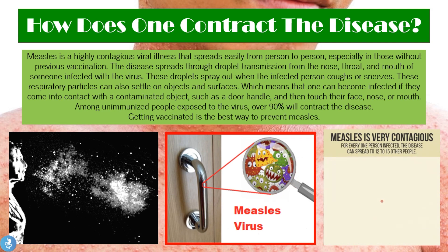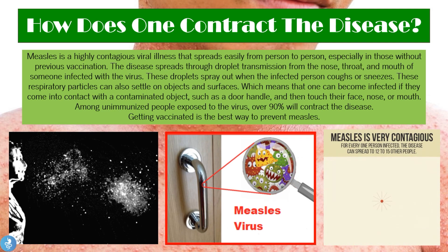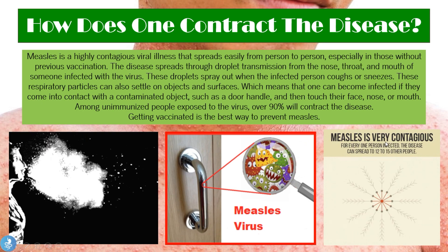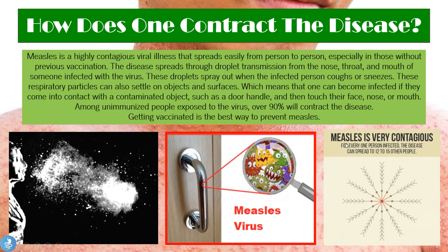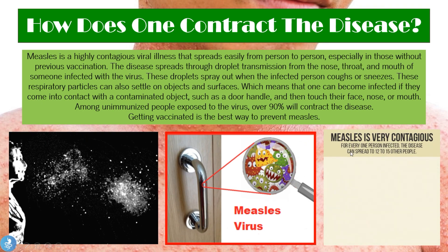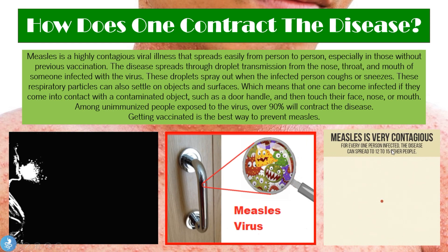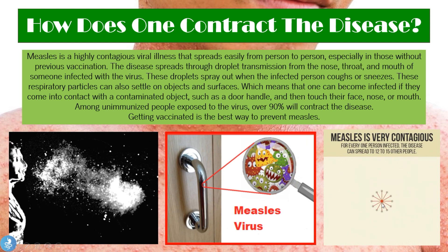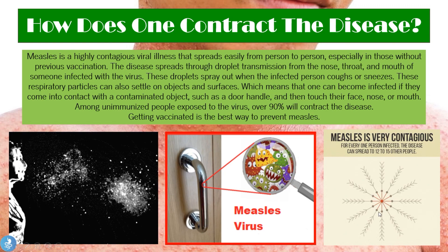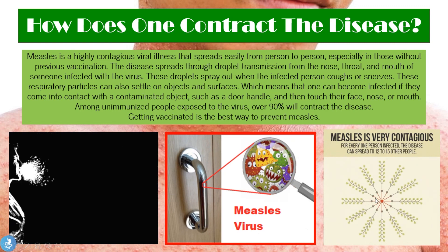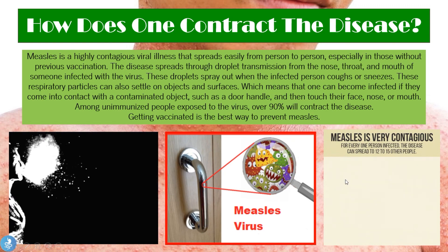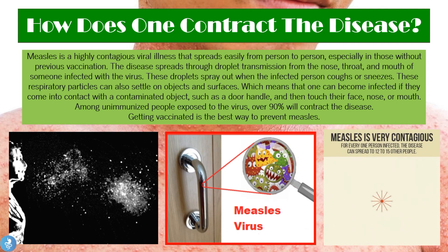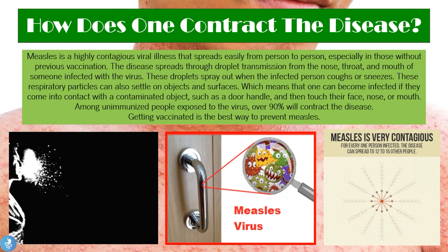Getting vaccinated is the best way to prevent measles. Measles is very contagious: for every one person that becomes infected, the disease can spread to 12 to 15 other people. So the first infected person infects 10 to 12 others, and then they infect 10 to 12 more, showing how quickly the disease can progress and spread.